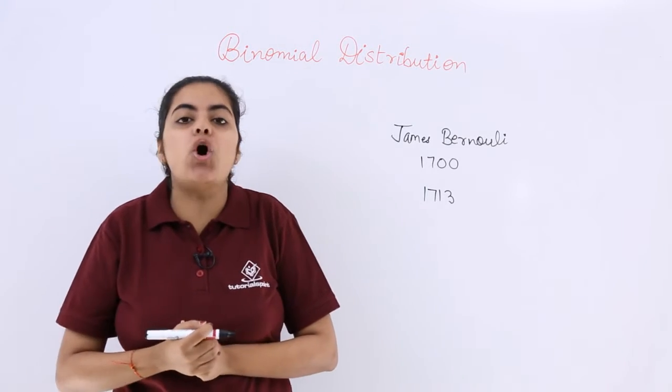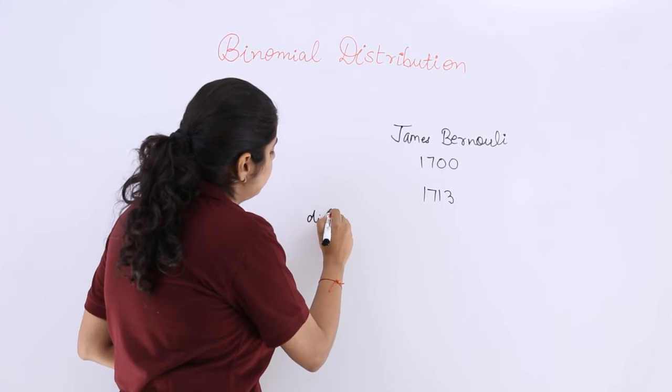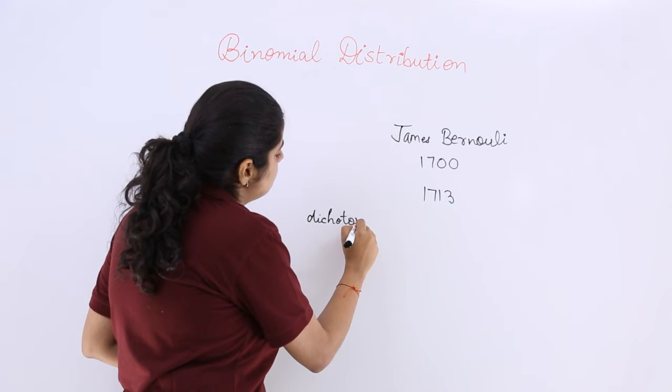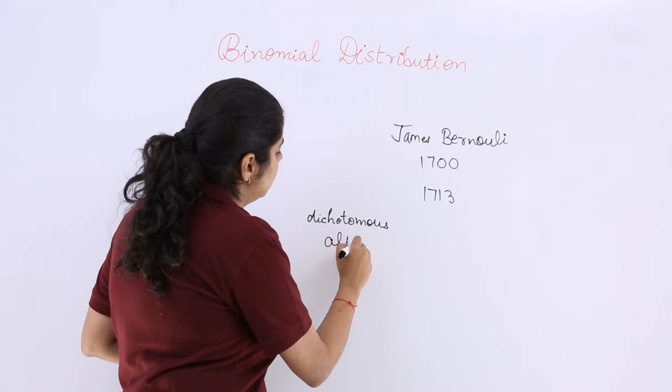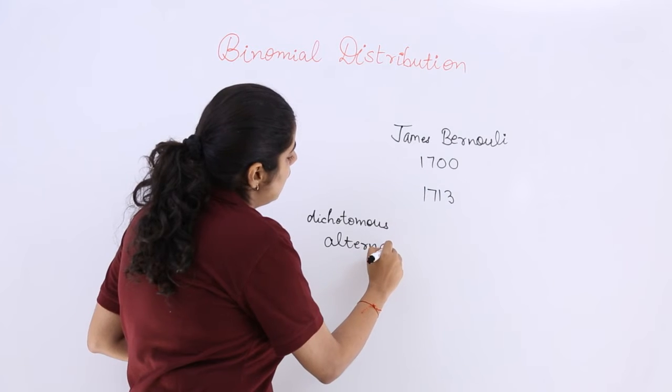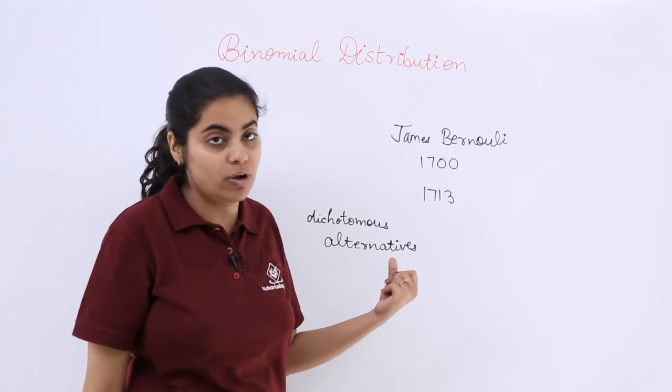So this is all regarding dichotomous events. There are various dichotomous alternatives. Now what are these? It is actually related to dichotomous alternatives.